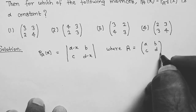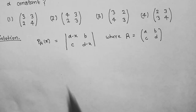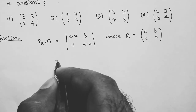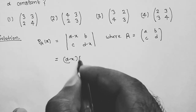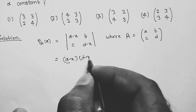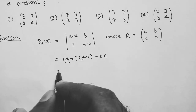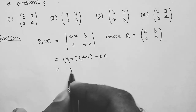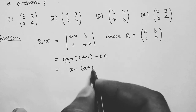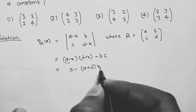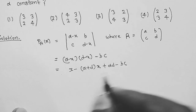So (A minus x)(D minus x) minus BC equals x squared minus (A plus D)x plus AD minus BC. This is equation number 1, giving us P_A(x).